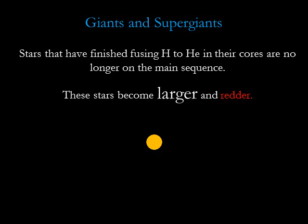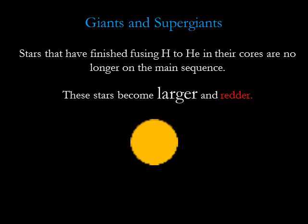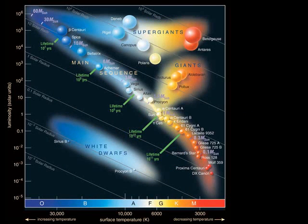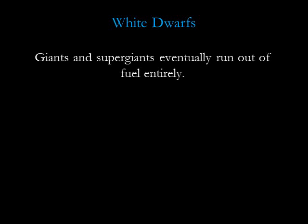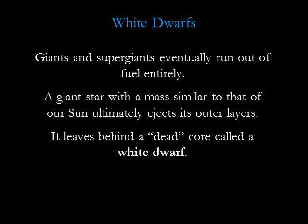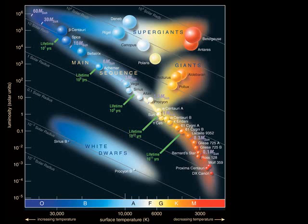Giant and supergiant stars are nearing the end of their lives. They've already exhausted their supply of hydrogen in their central cores. At this point, the stars puff out with their outer atmospheres becoming larger and more red. Giant stars are enormous — for example, Aldebaran in the constellation Taurus and Arcturus in the constellation Boötes are both more than 10 times as large as our sun. Betelgeuse is an enormous supergiant with a radius of about 1,000 times that of the sun. Giants and supergiants eventually run out of fuel entirely. A giant star with a mass similar to that of our sun ultimately ejects its outer layers, leaving behind a dead core in which all nuclear fusion has stopped. White dwarfs are these remaining embers of former giant stars. A typical white dwarf is no larger in size than Earth, but has a mass similar to that of our sun. Procyon B is one such example.